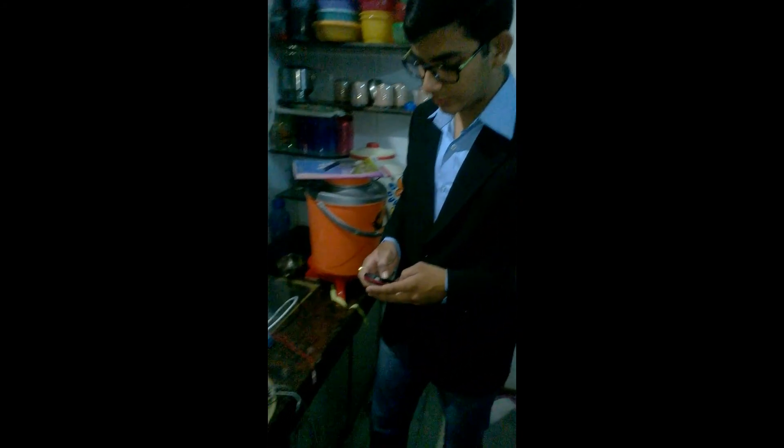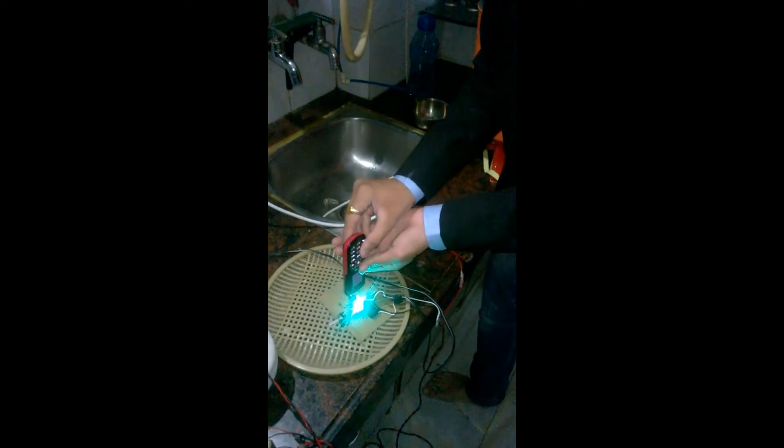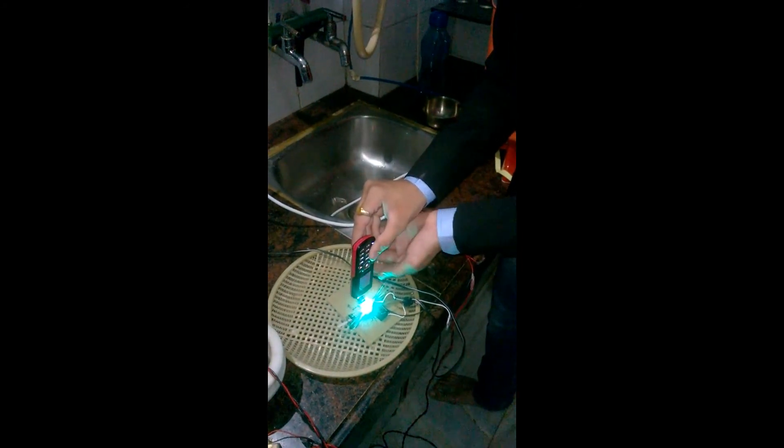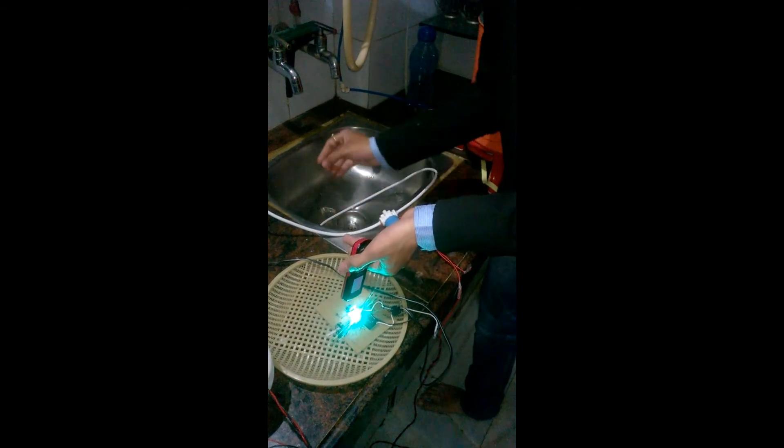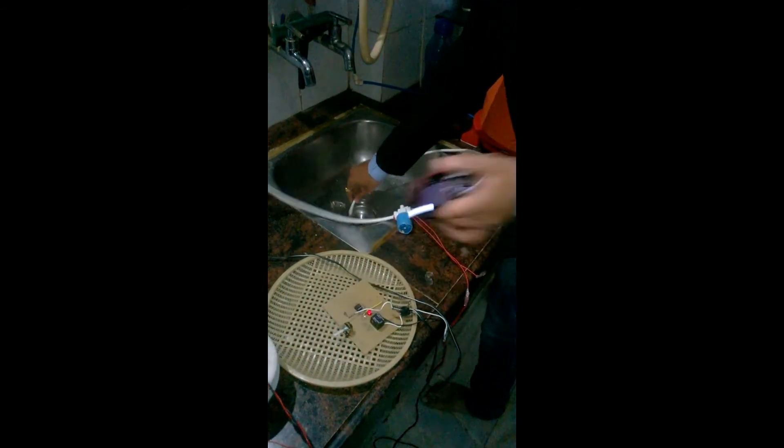Now I will start an LED and simulate daytime. I have started the LED and daytime is simulated, so the green light is on which shows the activated mode of SV, and the water is coming outside the SV.